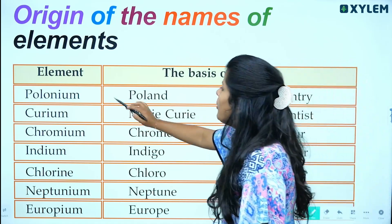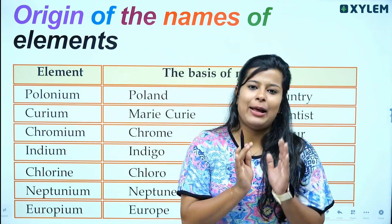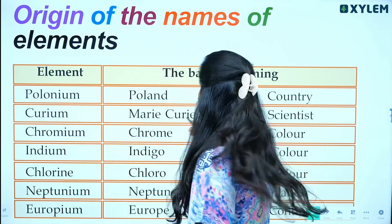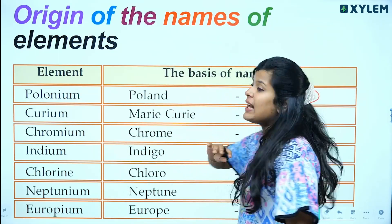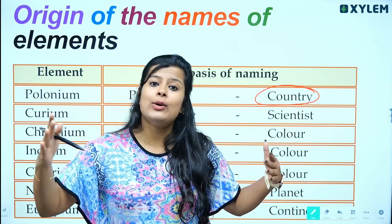The following elements come from this: the name of Poland represents a country. So some elements are named after countries.